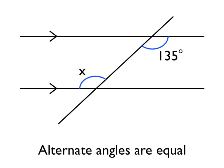Here's another typical angles in parallel lines problem. We've got a pair of angles. One is 135 degrees. Another one is an unknown angle of size X. And you can spot that these two angles are actually alternate angles, so they are equal in size. So angle X must also be 135 degrees.